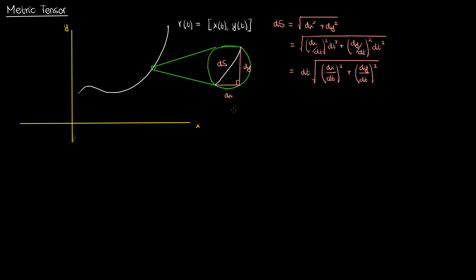So this is what ds looks like in rectangular coordinates, but what about polar coordinates? I could draw the same zoomed-in line segment, but now the sides of my triangle would be constructed according to polar coordinates. I'd have one side representing the component in the theta direction with length r dtheta — technically an arc on the circle, but approximated as a straight line for small enough distances. In addition, I'd have another side representing the component in the radial direction with length dr. The arc length element ds in polar coordinates is then given by the square root of dr squared plus (r dtheta) squared.